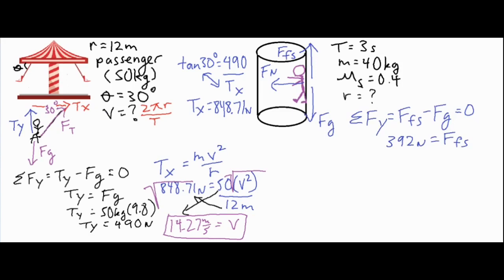In the x direction, we just have the normal force. The normal force is our centripetal force because it's the only force pointing toward the center of the circle. So that's the net centripetal force, and it equals mv squared over r.